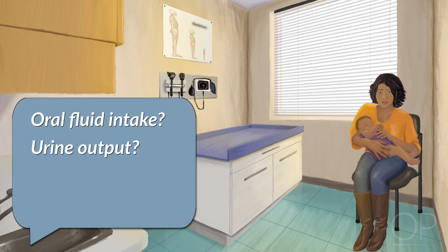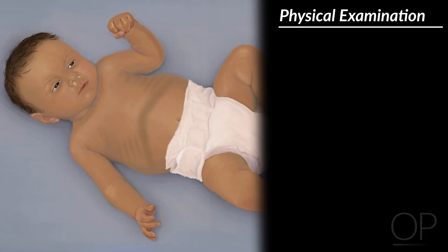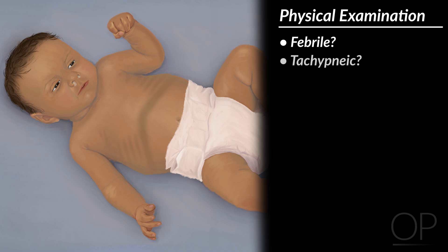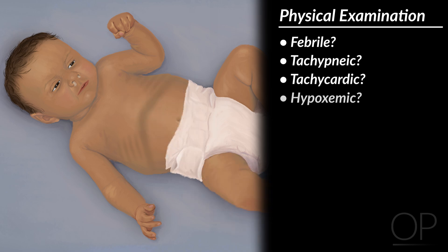Also, make sure to ask about periods of cyanosis or apnea, as premature infants and infants less than 2 months old are at higher risk for apnea. When examining a baby with suspected bronchiolitis, first start with a review of the vital signs and an assessment of her general appearance. Is the baby febrile, tachypneic, tachycardic, or hypoxemic?